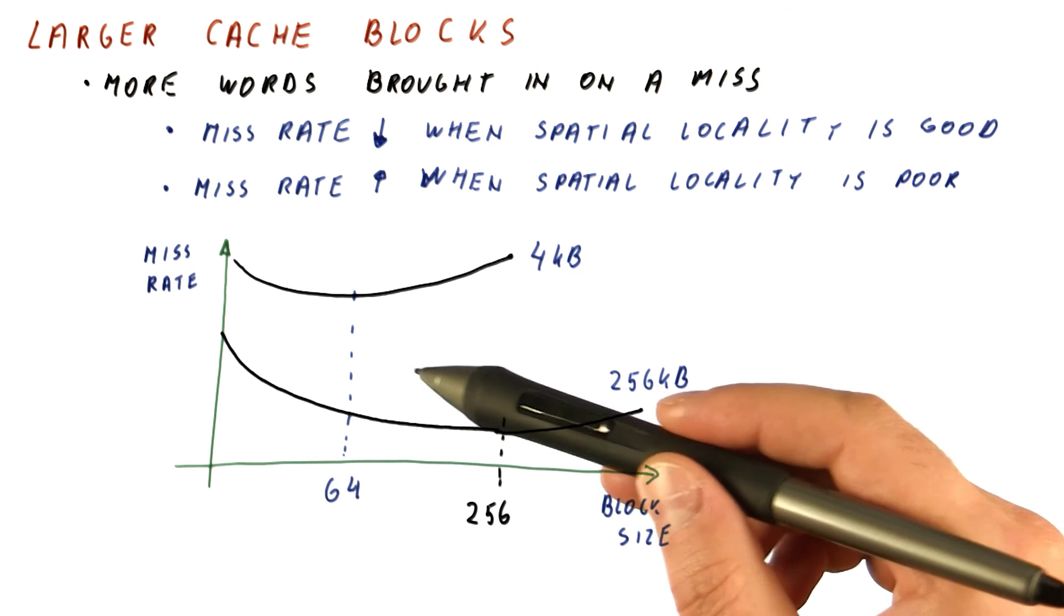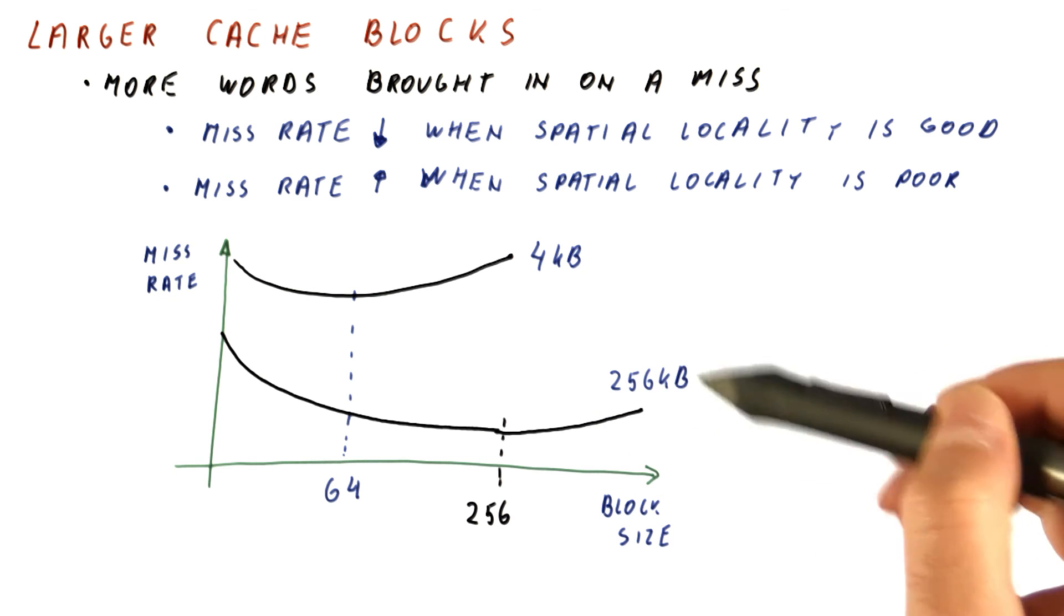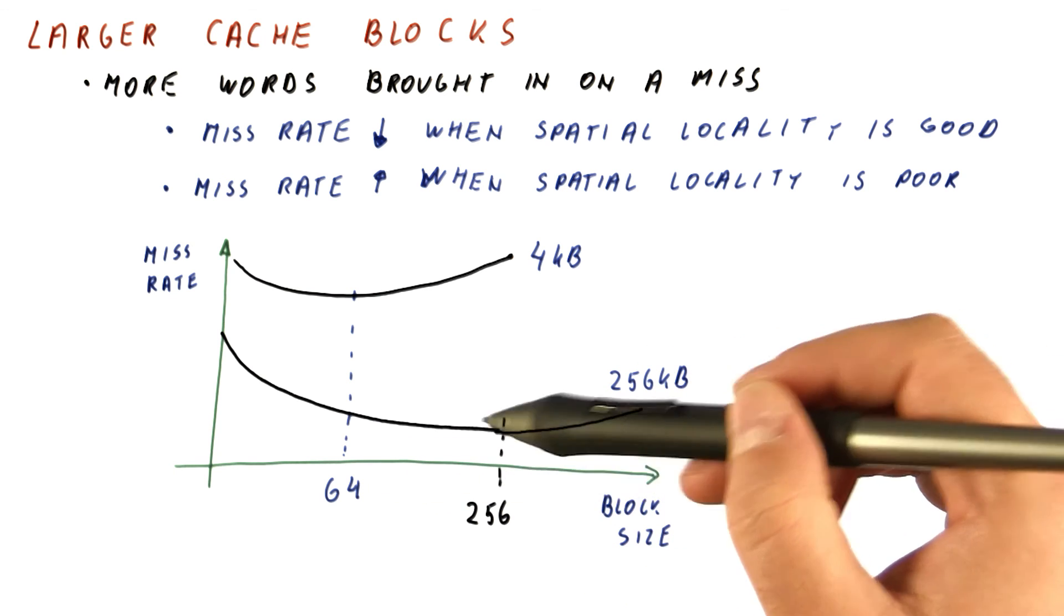Overall, we can reduce the miss rate, especially in a larger cache, if we increase the block size.